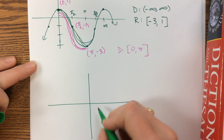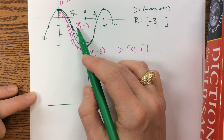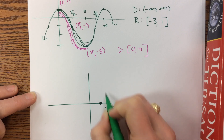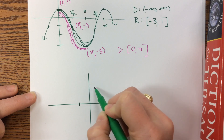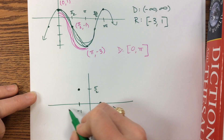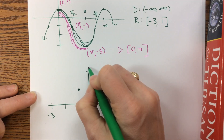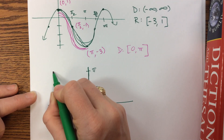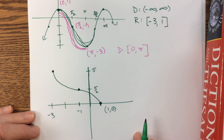I had the point (0, 1), so that tells me I have the point (1, 0). And then I had the point (π/2, −1), so now I want the point (−1, π/2). Let's say that this is π/2, so here's (−1, π/2). And then I need the point (−3, π). And if this is π/2, this is about π, and we're here-ish. So we have something like that as our graph.